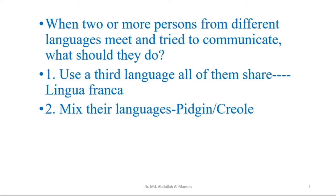Think of a situation when two or more persons from different languages meet and try to communicate. What should they do? They have two options: they can use a third language all of them share, which is called a Lingua Franca, or they can mix their languages for communication, which is called a Pidgin or a Creole.